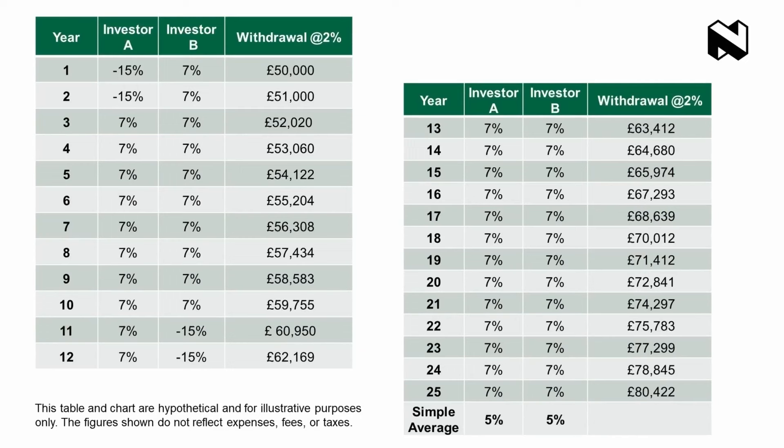It's a little bit complicated and technical, but I'd like to give a quick example. On screen we have a table showing two investors. They both start off with a million pounds each, both withdrawing £50,000 every single year inflated at a relatively low inflation rate of 2%. Both investors have an average return of 5% over the entire period with the same volatility, so you would expect them to have exactly the same retirement experience.